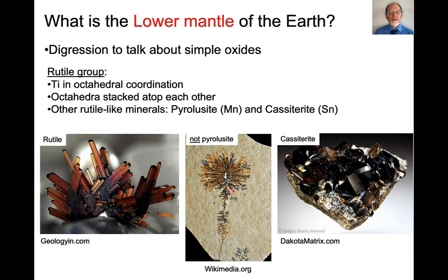Another important oxide group is the rutile group. In rutile, TiO2, the octahedra are just stacked atop each other. There are these long chains of octahedra. I'll show you that in just a second. And there are a couple of other minerals that have the same kind of structure. There's pyrolusite, which is a manganese oxide, and cassiterite, which is tin oxide. Cassiterite is an important ore of tin.